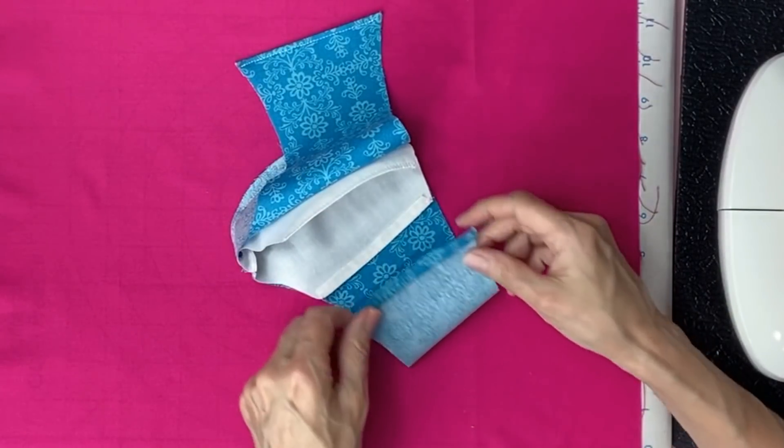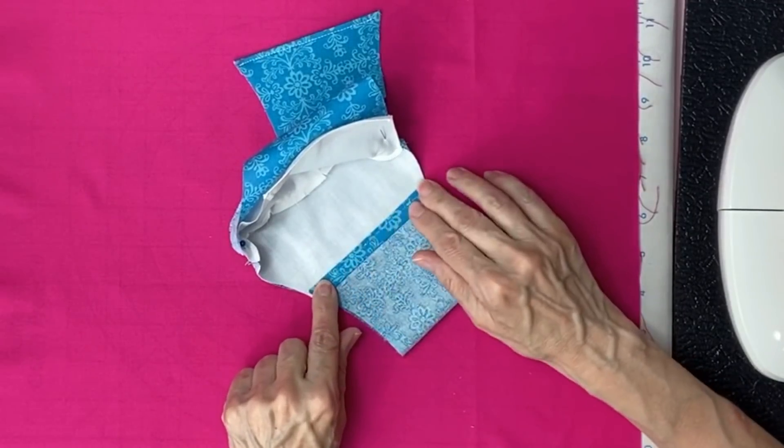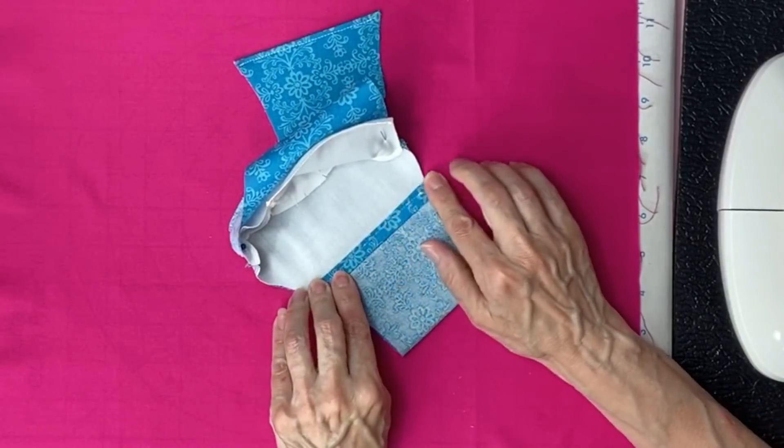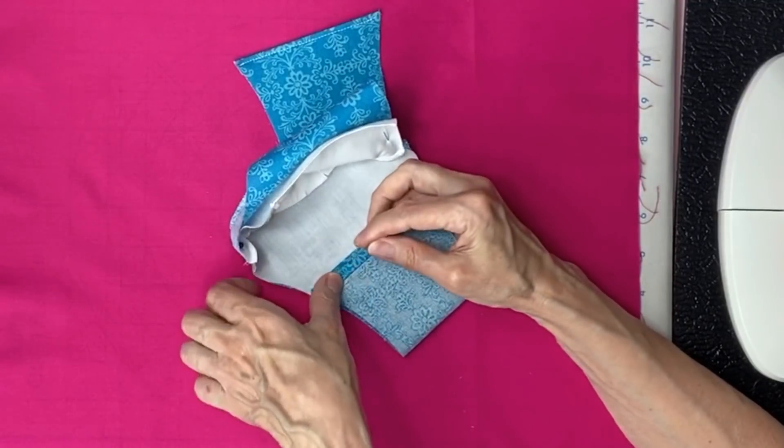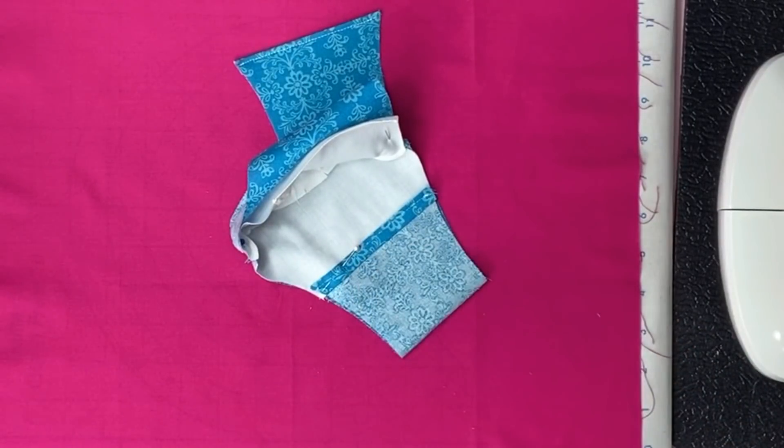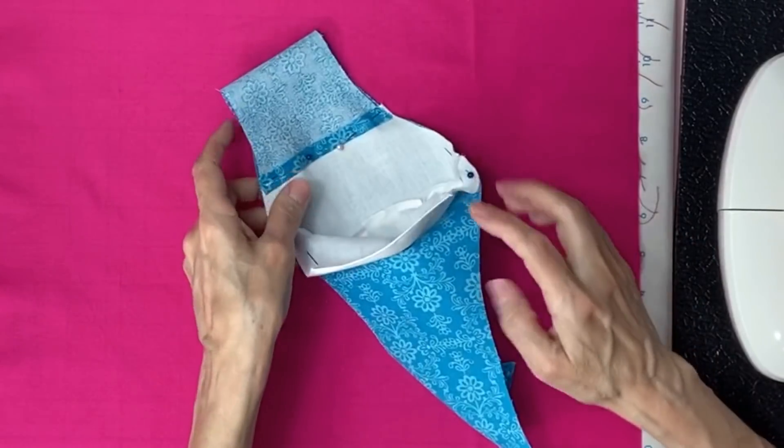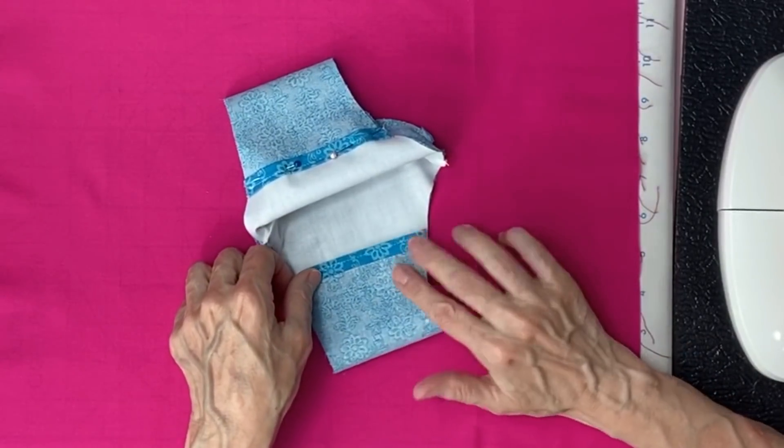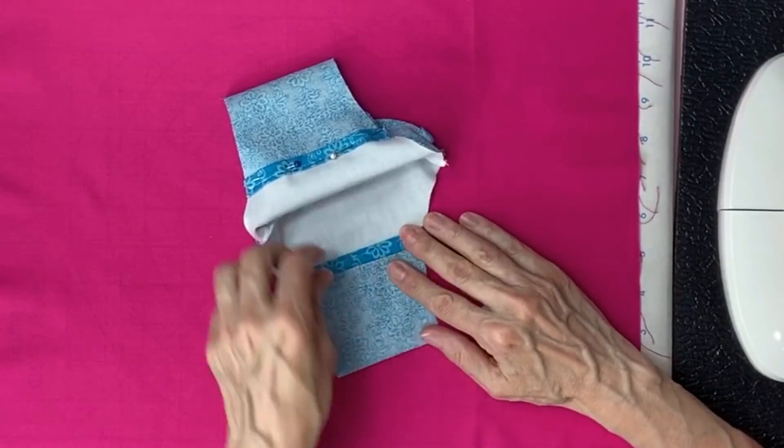We're going to take this flap and we're going to fold it over. I'm going right over the seam. Right there. Let me show you. Just a little bit over the seam. And pin it. And you want to make sure this is nice and flat. Now we'll repeat for the other side. Fold it over. And just go a little bit over that flap. And if you go a little more, that's okay. Make sure this is nice and flat.